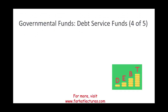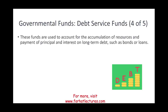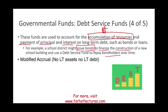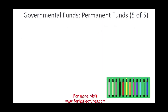The fourth type is debt service funds. These funds account for the accumulation of resources — tracking money set aside for payment of principal and interest on long-term debt such as bonds and loans. For example, a school district might issue a bond to finance construction of a new school building and use a debt service fund to repay bondholders over time. Modified accrual is used here.